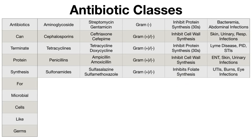S stands for sulfonamides. Some examples include sulfasalazine and sulfamethoxazole. The drug names can usually be remembered because they start with 'sulfa.' Sulfonamides cover both gram-positive and gram-negative bacteria. Their mechanism of action is unique in that they inhibit folate synthesis. Bacteria have the unique ability to generate their own folate, which humans cannot — we have to get folate from our diet. This allows sulfonamides to target this unique bacterial function. Example uses include urinary tract infections, burns, and eye infections.